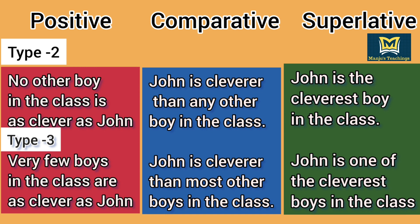Type 3: very few persons, places or things are compared with many. The difference between type 2 and type 3 is that in type 2, one is compared with many, and in type 3, few are compared with many. Example — positive: 'Very few boys in the class are as clever as John.' Comparative: 'John is cleverer than most of the boys in the class.' Superlative: 'John is one of the cleverest boys in the class.'